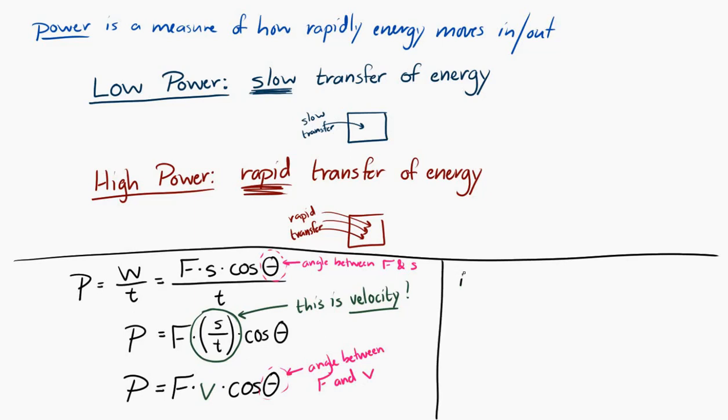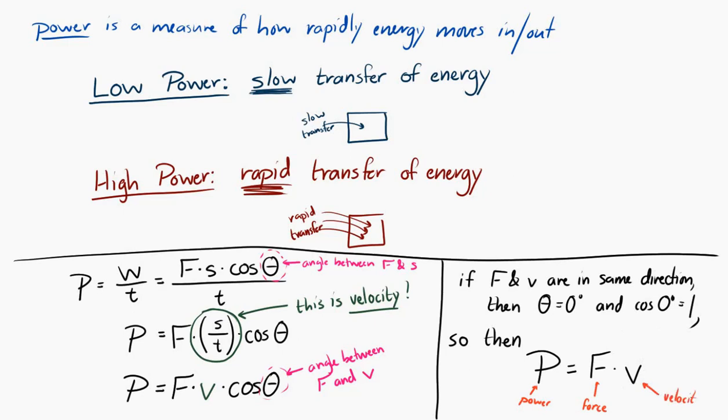If the force and the velocity are in the same direction, then theta is equal to zero and the cosine of zero degrees is equal to one. And so this simplifies to P, power, is equal to F, force on the object, times V, the velocity of an object.